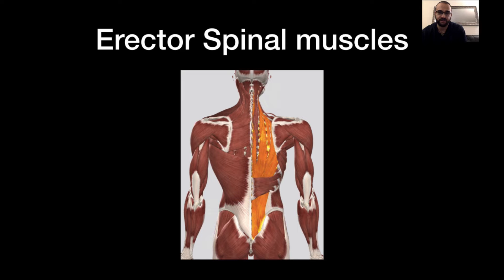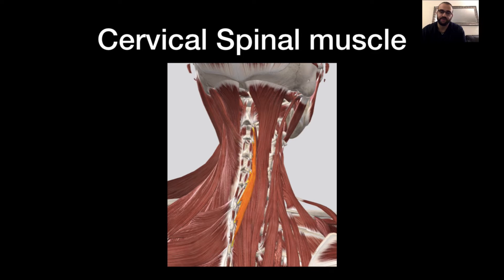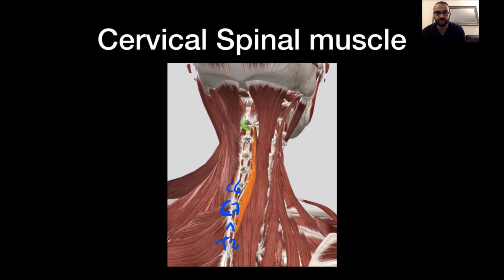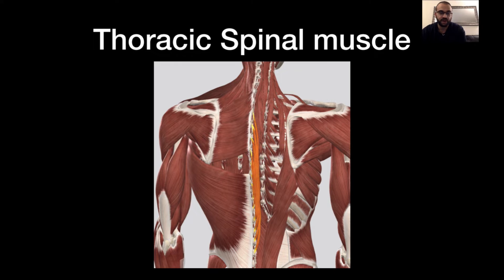Moving on to the erector spinae muscles, we start with the spinalis muscles. The cervical spinalis muscle originates from C6 to T2 and inserts at the transverse process of C2, C3, and C4. The thoracic spinalis muscle originates from T10 to L3 and inserts at T1 to T8. When both the cervical and thoracic spinalis muscles contract, they extend the trunk.